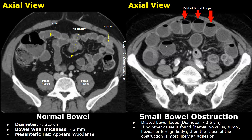In the image on the right, small bowel obstruction is present. You can see dilated bowel loops — small bowel loops with a diameter greater than 2.5 centimeters. If no other cause is seen such as a hernia, volvulus, bezoar, or a foreign body, then the cause of the obstruction is most likely an adhesion. This small bowel obstruction was due to an adhesion.